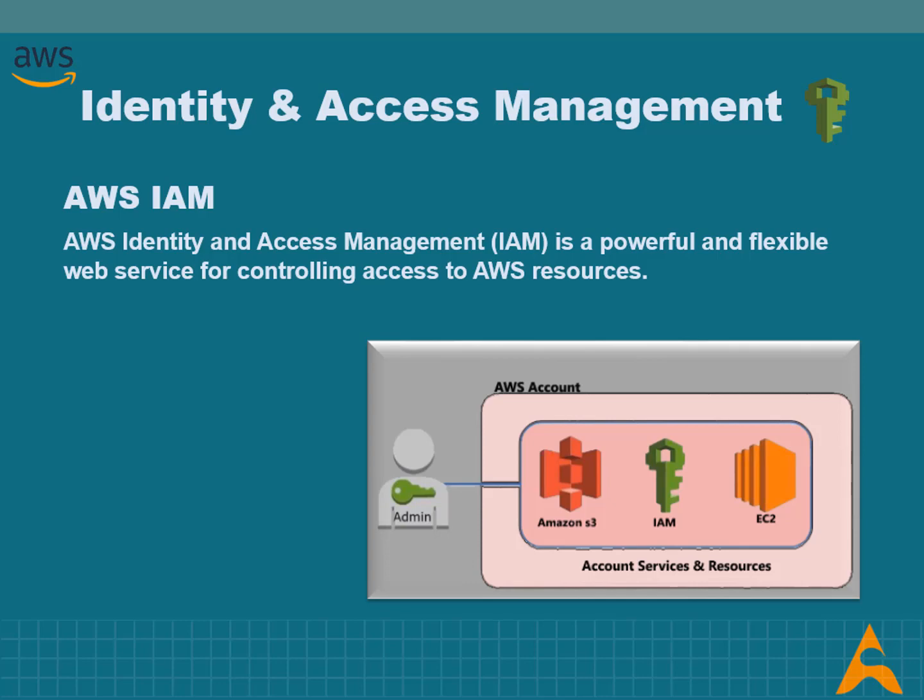AWS Identity and Access Management is a powerful and flexible web service for controlling access to AWS resources. Enterprises use identity management basically to safeguard their information assets against the rising threats of ransomware, criminal hacking, phishing, and other malware attacks. IAM enables customers to leverage the agility and efficiency of the cloud while maintaining secure control of their organization's AWS infrastructure.